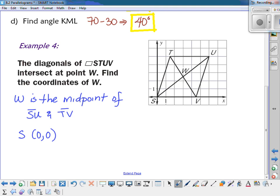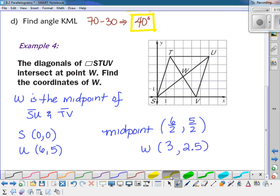I can see that S is at (0, 0) and U is at (6, 5). So if I want to find the midpoint, I just average my x's and average my y's. So 6 plus 0 over 2, which is 6 over 2, and 0 plus 5 over 2, which is 5 over 2. And then if I go ahead and simplify that, I find that W is at (3, 2.5). And that is the midpoint, W.